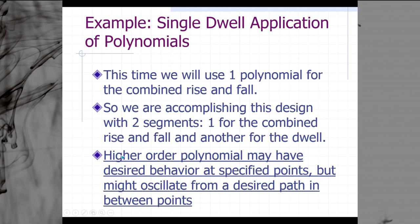Because we're using a polynomial for the combined rise and fall, this polynomial will probably have higher order than it would otherwise. A higher order polynomial may have desired behavior at the specified points, which are the boundary conditions, but it may oscillate from the desired path in between the points. We'll be able to see this after we plot the position, velocity, acceleration, and jerk. We'll look at these plots and determine if they are good enough, or if we need to go back and redesign our CAM.